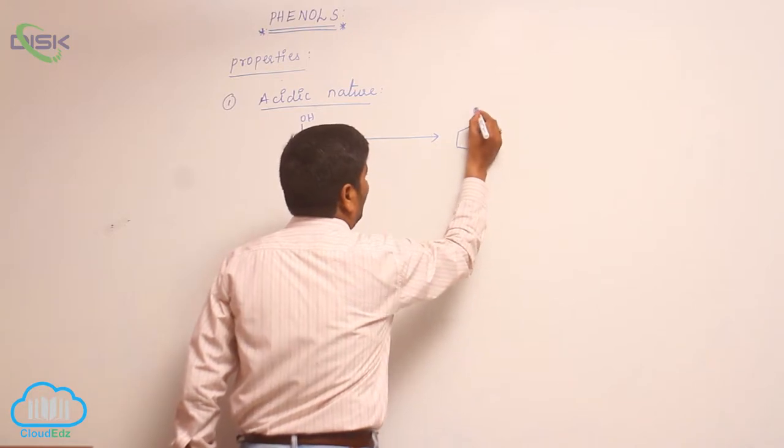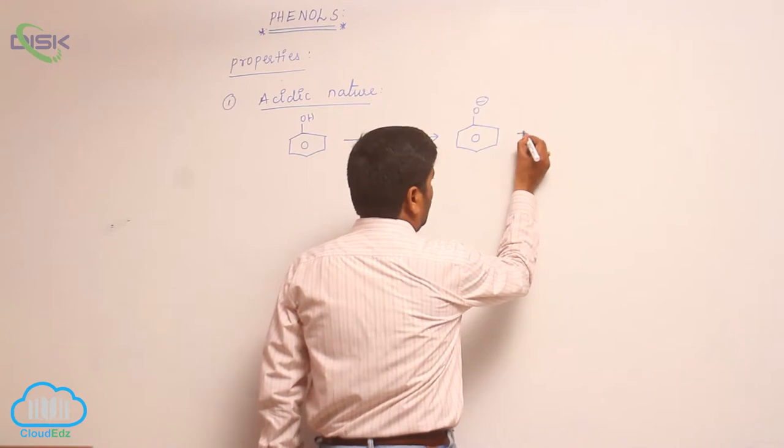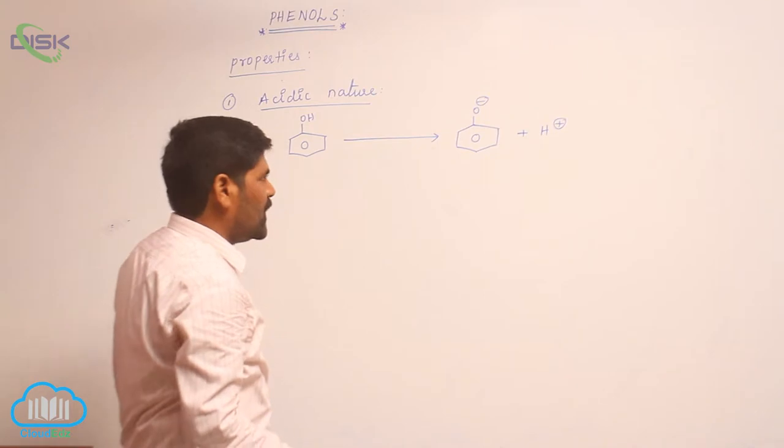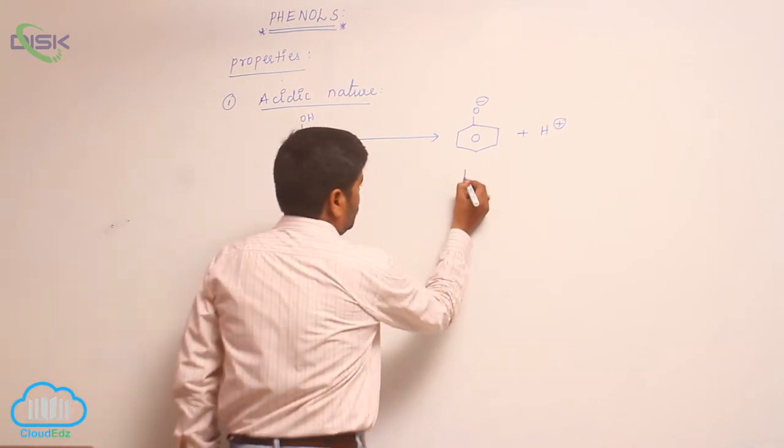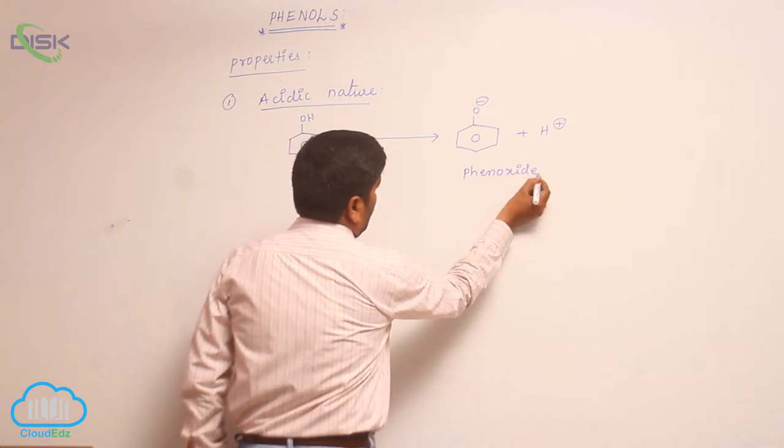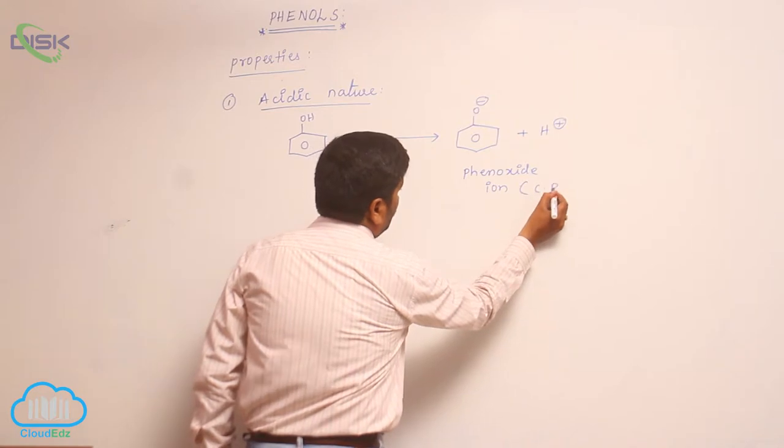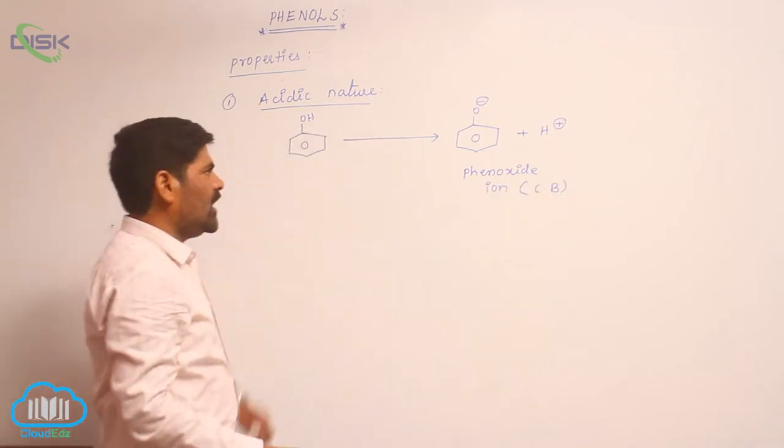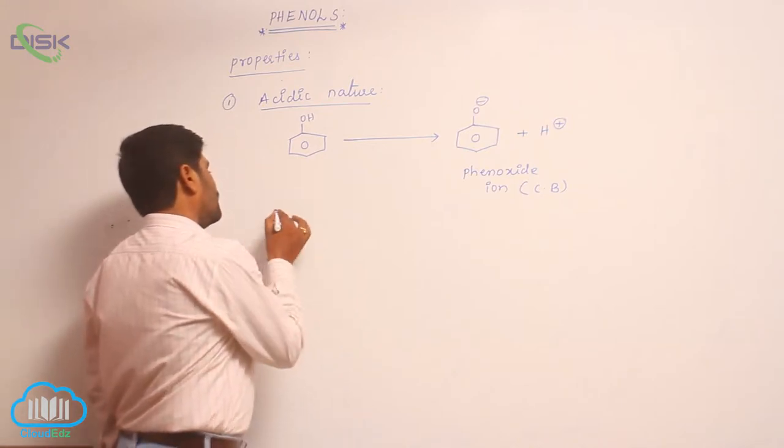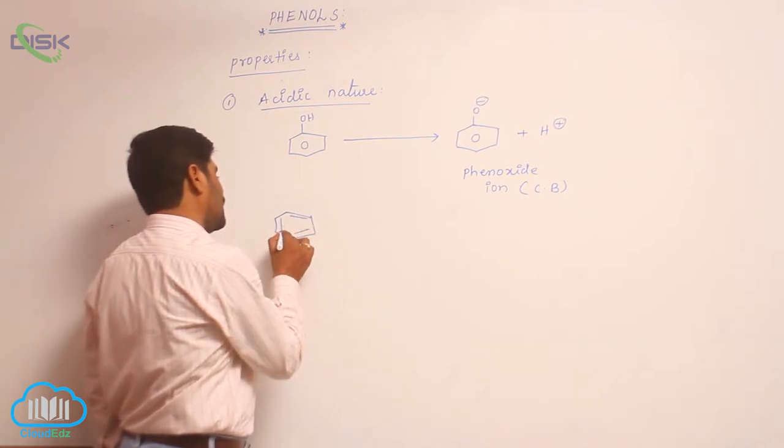On the basis of resonance, phenol converts into a conjugate base known as phenoxide ion and H plus ion. This is known as phenoxide ion. It is CB, CB means conjugate base of phenol. Conjugate base of which one? Phenol. Now the acidity of phenols is clearly explained on the basis of resonance.